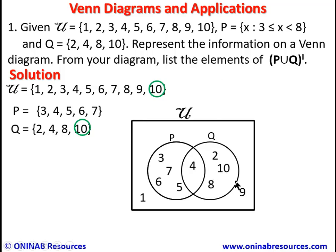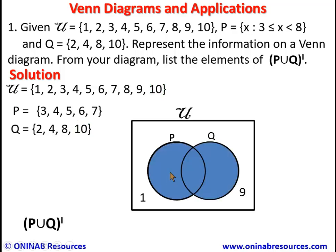Now, from the diagram, we list the elements of P union Q prime. P union Q covers the regions within both circles. P union Q prime is everything outside those two circles — that is, outside the rectangle region, which gives us 1 and 9. So P union Q prime = {1, 9}. We have done justice to problem one.